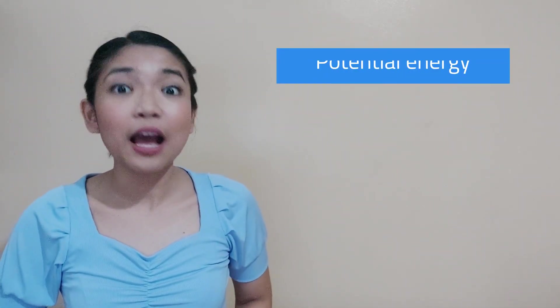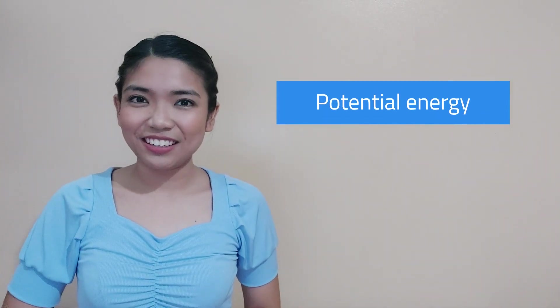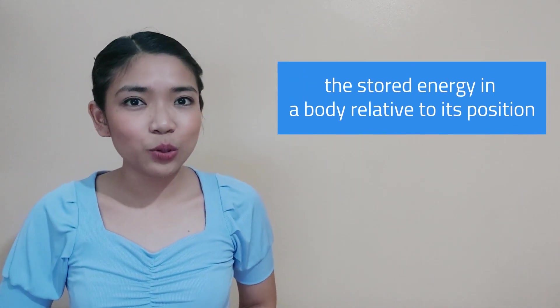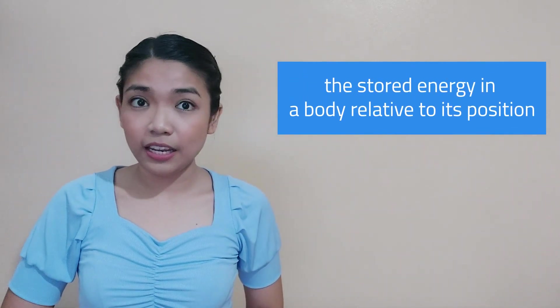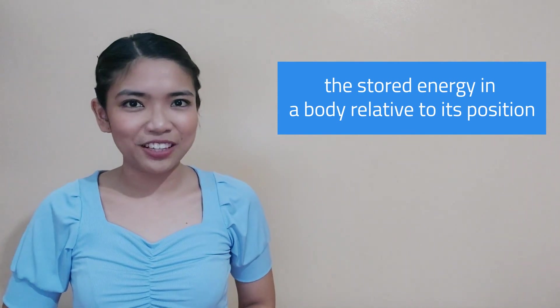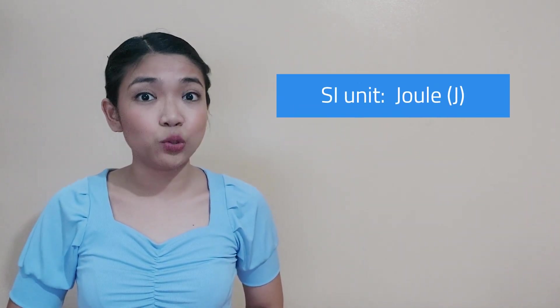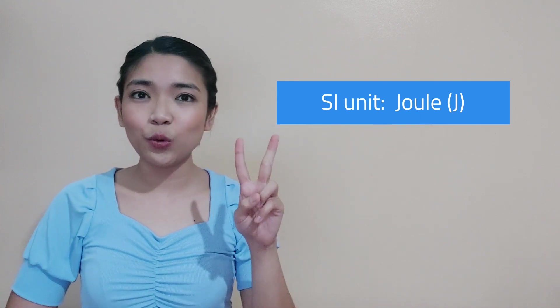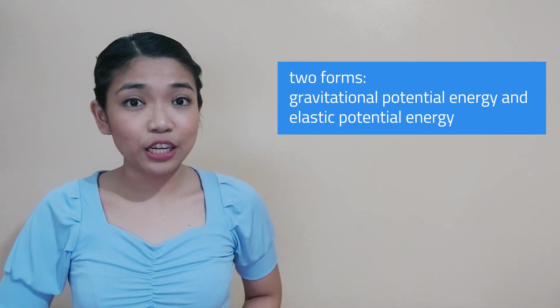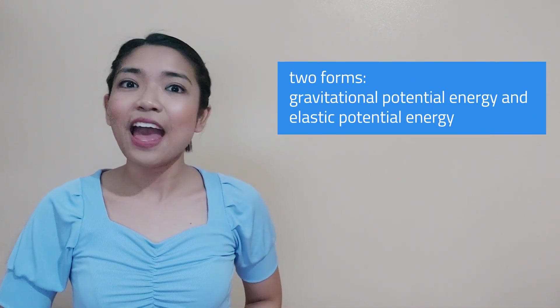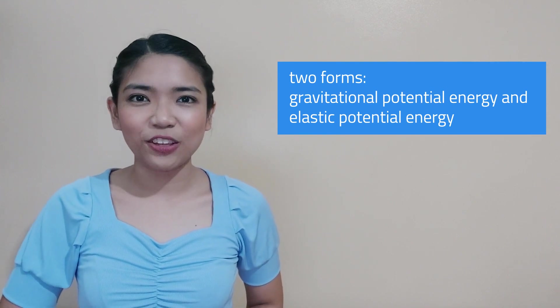What's the difference between these two forms of mechanical energy? Let's find out! Let's begin with potential energy. This is the stored energy in a body relative to its position. The SI unit for potential energy is joules. It has two forms: gravitational potential energy and elastic potential energy.